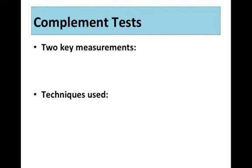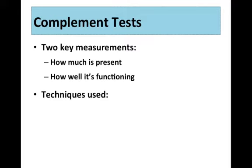When we look at complement tests, there are two different measurements that we can get from these tests. The first is how many or how much of a particular complement protein is present, so it's quantitative. We can also measure how well the complement system is functioning — whether a protein is functional, non-functional, or overly functional.